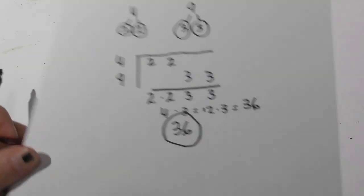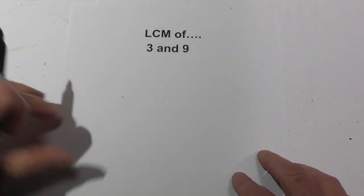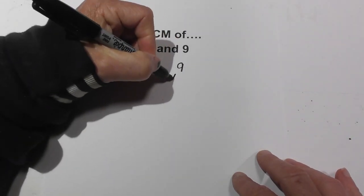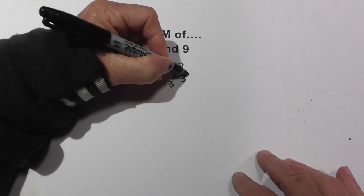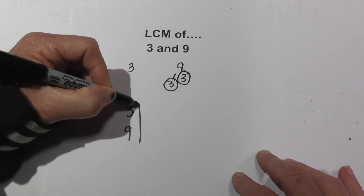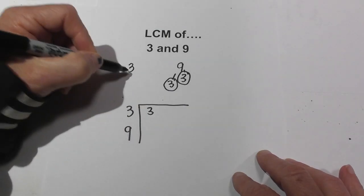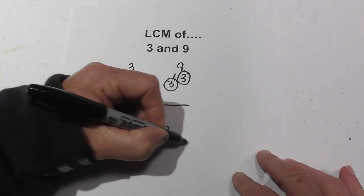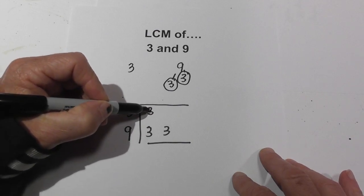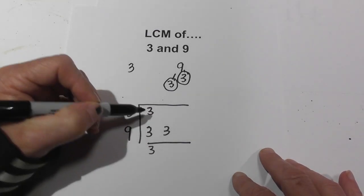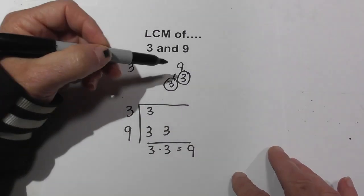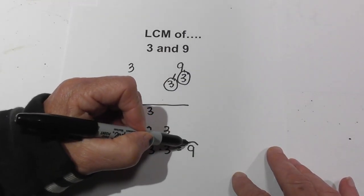Now let's apply the same thing for 3 and 9. The factor tree for 3 is just 3. We have 9, and that's 3 times 3. So now I'm going to create a chart just like before, and I put 3, 3, and 3. Now we get to see what I mean by applying the rule: since I have two numbers, I'm going to bring down just one 3, then bring down the other. So you just have 3 times 3, which is 9. The LCM of 3 and 9 is 9.